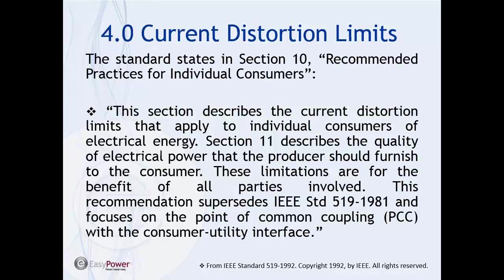Now for current distortion limits — this is the big one. The standard states in Section 10: 'This section describes the current distortion limits that apply to individual consumers of electrical energy.' This is written for plants and buildings where there is an interface and an exchange between a utility and a consumer. Section 11 describes the quality of electrical power that the producer should furnish to the consumer. These limitations are for the benefit of all parties involved, and this recommendation focuses on the PCC with the consumer-utility interface.